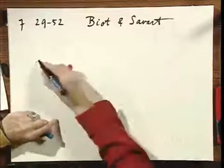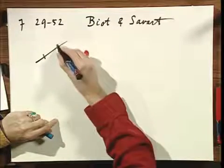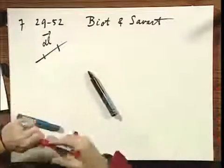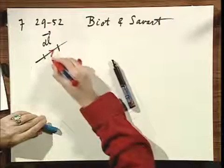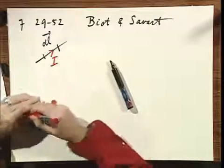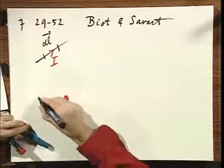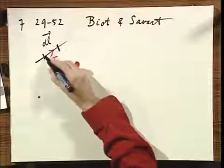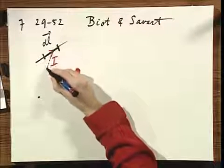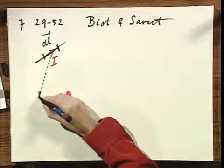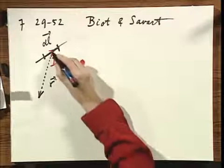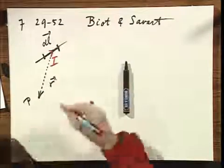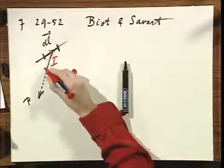Biot and Savart said if I have a small element of a wire that draws a current, the dL is always in the direction of that current. If I want to know at a particular position here what the magnetic field is due to this small element alone, they call this the vector R, from the current element to that point P where you want to know the magnetic field.